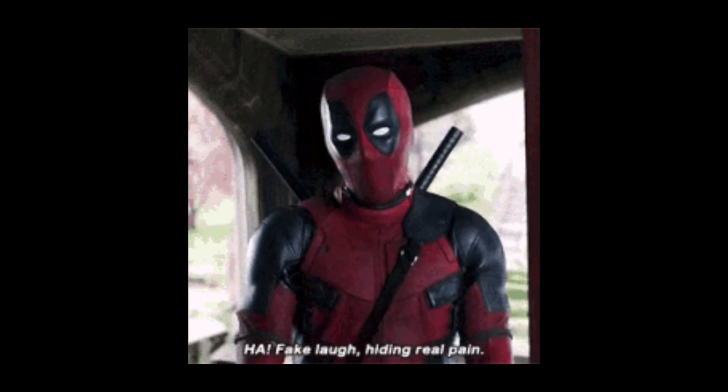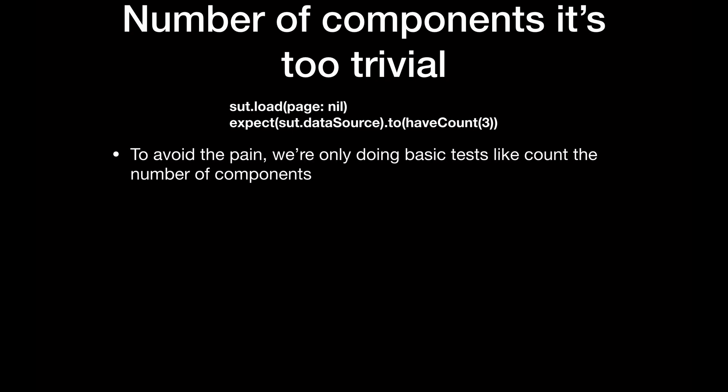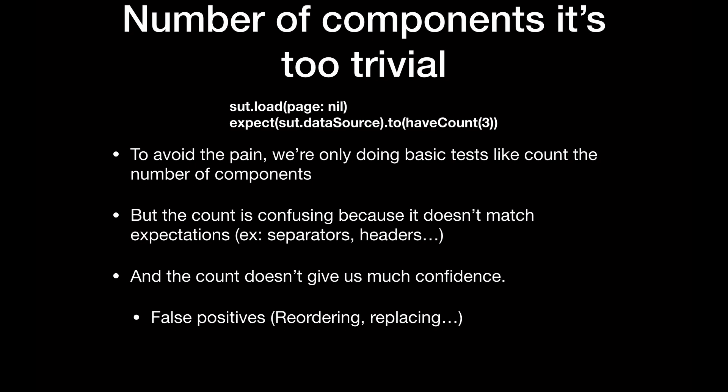We want to test the component creation of the entire flow, but oh man it is painful. We started by just making sure the number of components is correct, but that's too basic. The count is confusing because we have components for separators or headers that visually look like one but are actually multiple components. The count doesn't give confidence — it gives false positives. If you reorder something by mistake, the test doesn't catch it. If you replace one component with another, the test doesn't catch it.